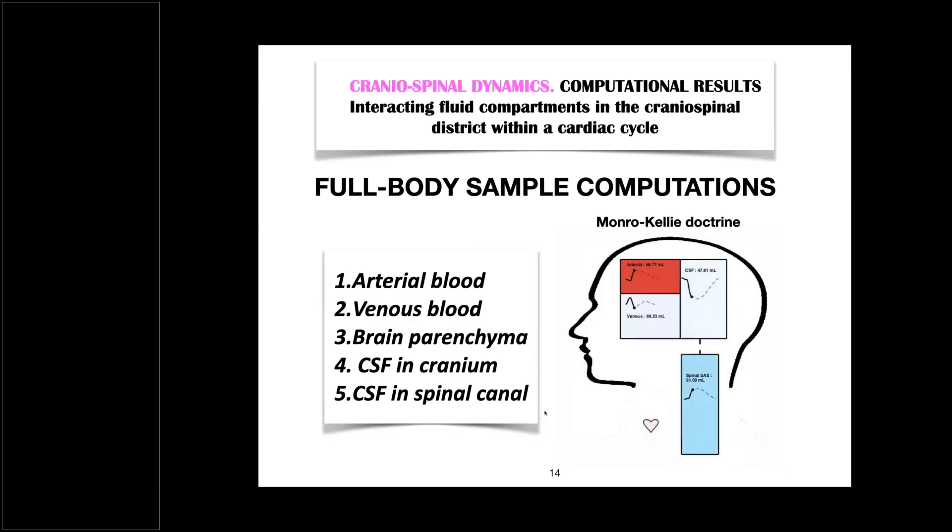Now, this is a sample computation here to show the capability fundamentally of the model. And so, this is a full-body sample computation, but I am displaying here only this of interest, perhaps, to you here. So, what we have by version of the Monro-Kellie Doctrine, we have a rigid casing here for the cranial cavity. And so, there is competition within the cardiac cycle. There is competition of volumes here. So, we have, during systole here, we have an increase in this red volume here. You can see it here. This rectangular area is representing that.